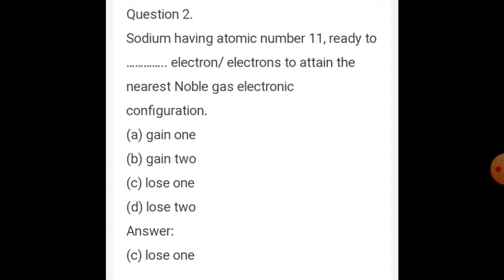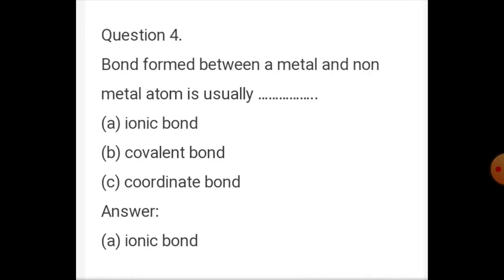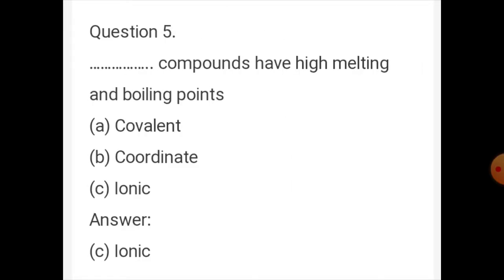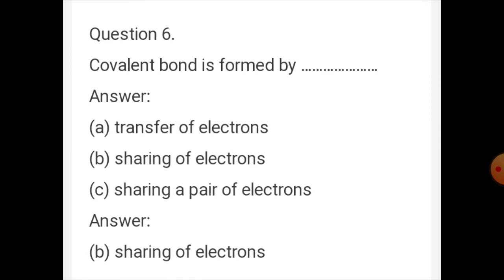The correct answer is: by gaining electrons in a chemical reaction — that is fluorine. Question number 4: the bond formed between a metal and non-metal atom is usually an ionic bond. Question number 5: compounds having high melting and boiling points — that is ionic compounds.